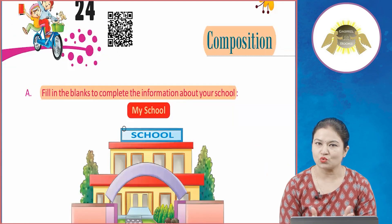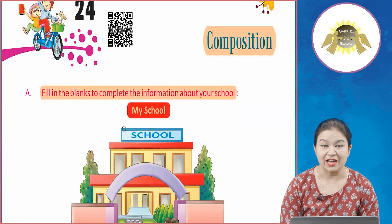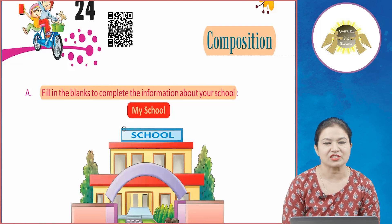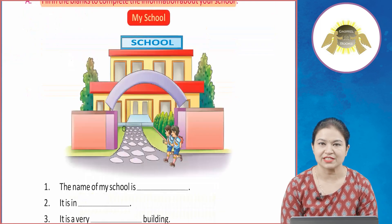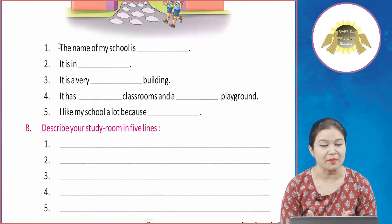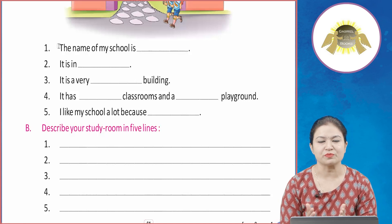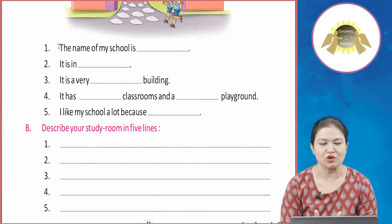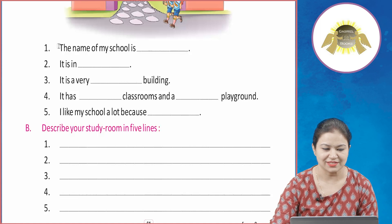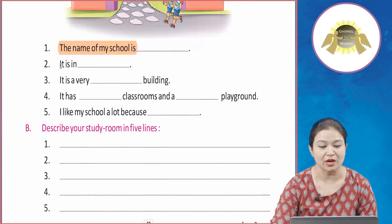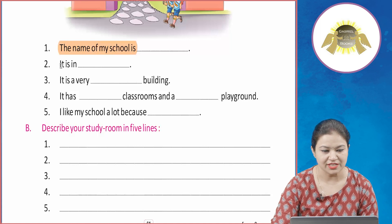Bacho, aapko yaha pe school ka picture diya gaya hai. Aapko is picture ko dekhte hue fill in the blanks ko fill karna hai — jaise aapka school kaisa hai, uska naam kya hai. Us basis pe aapko fill in the blanks fill karne hain. Jaise ki 'the name of my school is' — aapka school ka naam aap yaha pe fill karo ge.